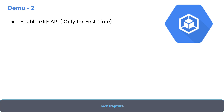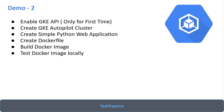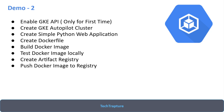In the second demo, the cluster will already be created. We'll create a simple Python web application, create our own Dockerfile, build our own Docker image, test it locally, then create an artifact registry, push our Docker image into it, and deploy that image on the GKE cluster. So in the first demo we deploy a public image, and in the second demo we build our own container image.